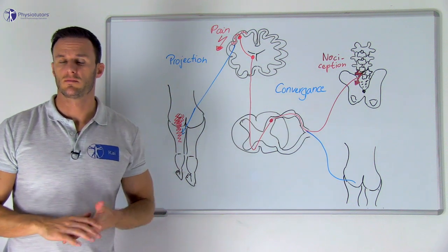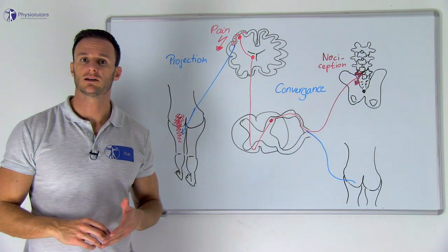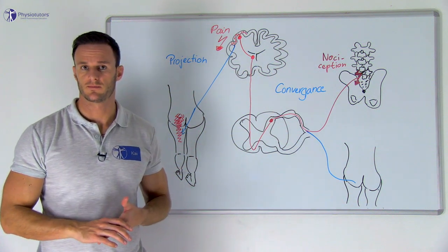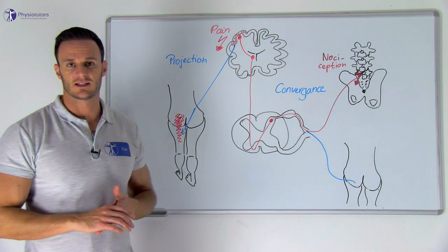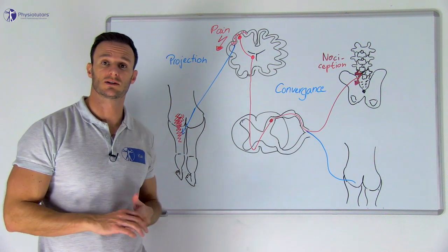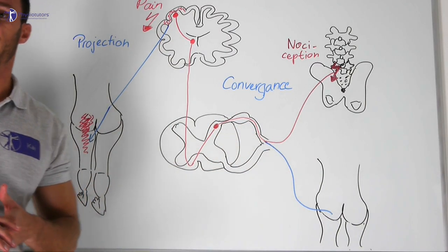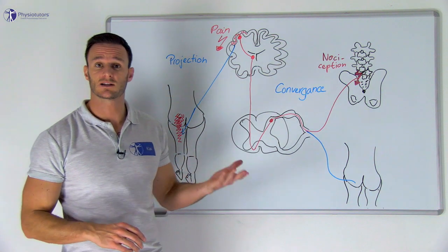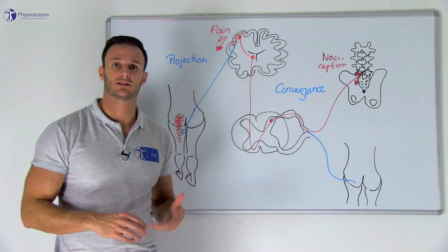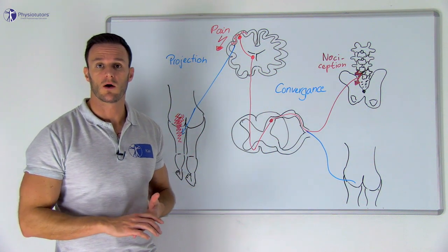So how can this phenomenon be explained? The leading theory behind referred pain is called the convergence projection theory. The theory states that pain is not or hardly felt in the area of actual nociception due to a low density of nociceptive afferent innervation. These are usually deep axial or proximal tissues like ligaments, joint capsules, tendons, muscle fascia, or muscle tissue — for example in the lower back or hip.